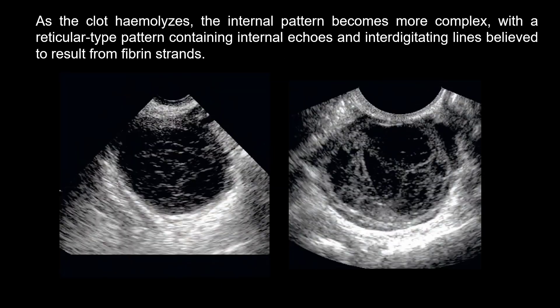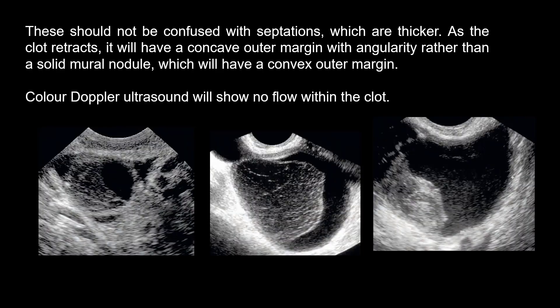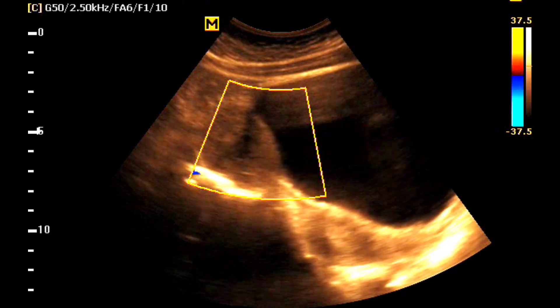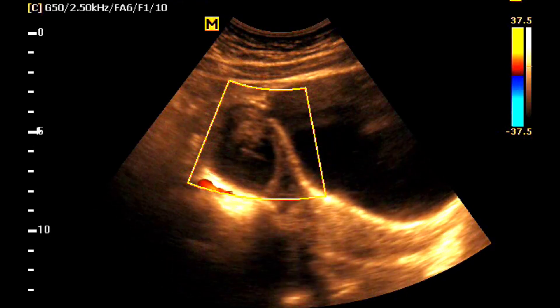As the clot hemolyzes, the internal pattern becomes more complex, with a reticular type pattern containing internal strands. This should not be confused with septation, which is thicker. As the clot remains intact, it will have a concave outer margin with angularity, rather than a mural nodule, which will have a convex outer margin. Color Doppler ultrasound will show no flow within the clot.